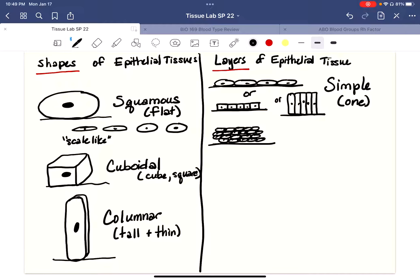You can have several layers of cubes, cuboidal. Here's just two layers. Anything that's not a single layer is considered stratified, just like the word strata, which means many.